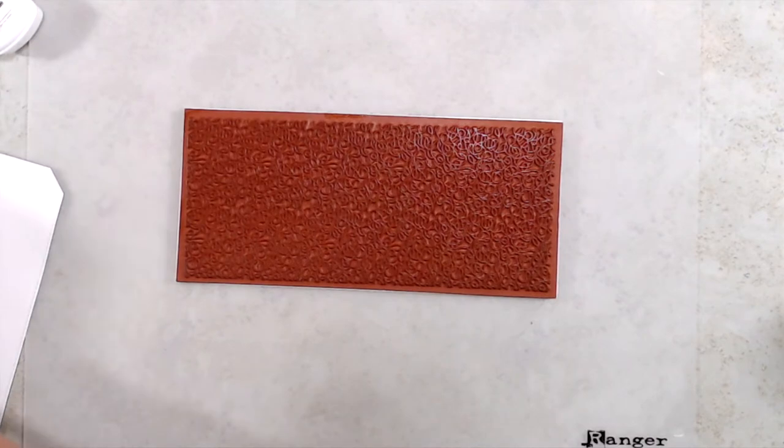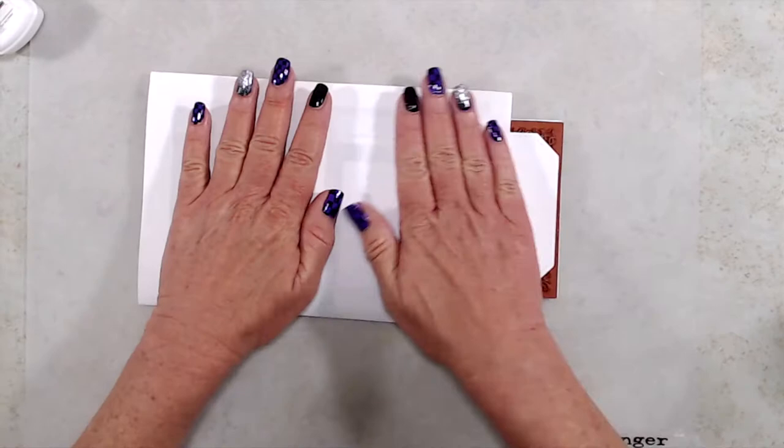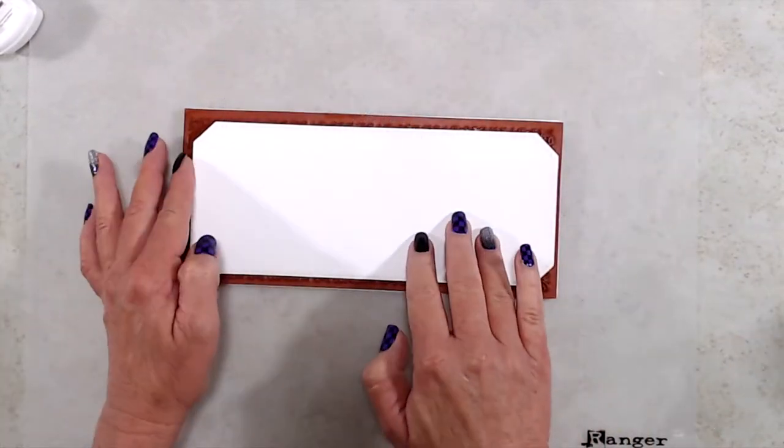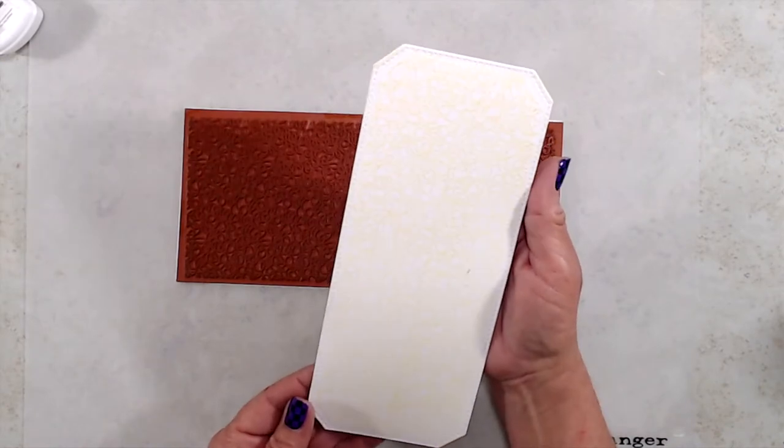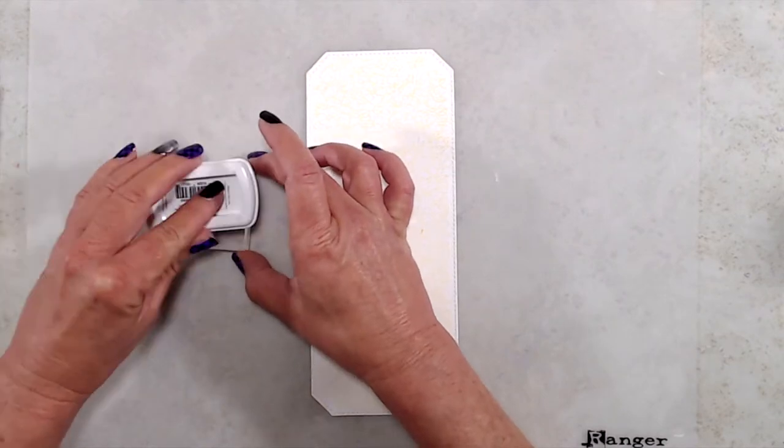So I started out with my background and I inked up the scribbles background stamp with some yellow ink. I cut a piece of cardstock with the largest die from the slimline cornered rectangles die set, placed that on top of my background stamp, and then put a piece of scratch paper on top of that and rubbed it so that ink would transfer really well.